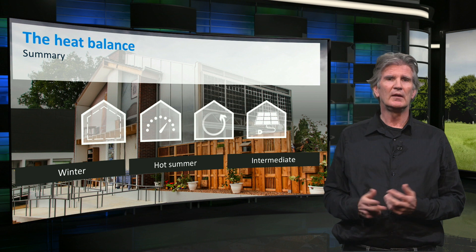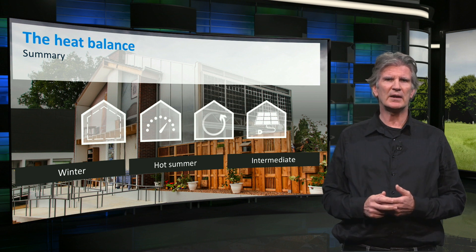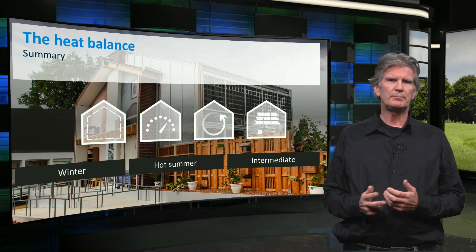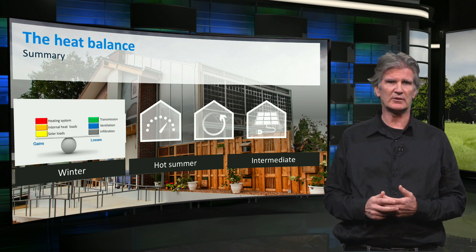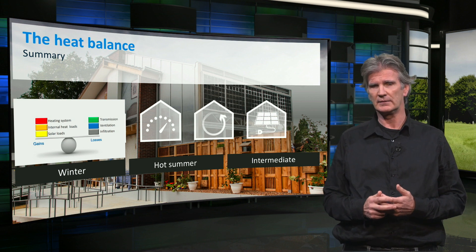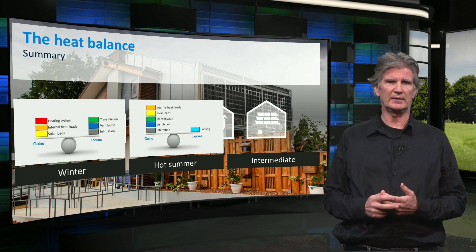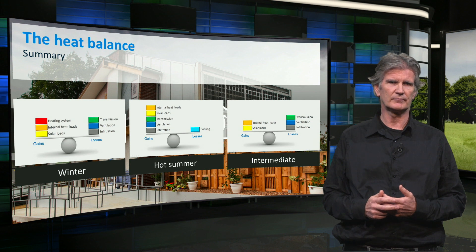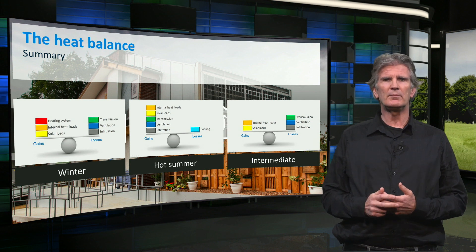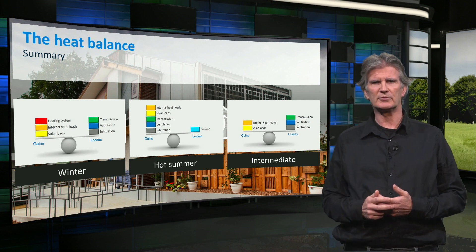To summarize, in this video you have learned what a heat balance is and how it changes throughout the year. Depending on the seasons there are different strategies to reduce the energy demand. In winter it is mainly about reducing transmission and ventilation losses and optimizing solar gain. In summer it is about reducing solar heat gain. And in the intermediate seasons it is about balancing solar heat gain and the amount of ventilation. In the upcoming lessons we will show you some examples of these strategies.